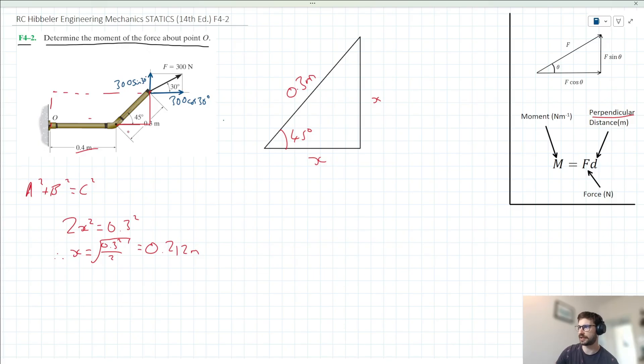Okay, so looks like this length here is 0.212 meters. This length here is 0.212 meters. This then gives us a basis to start taking moments about point O, right? So let's go ahead and do that.